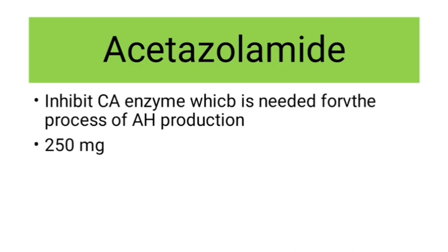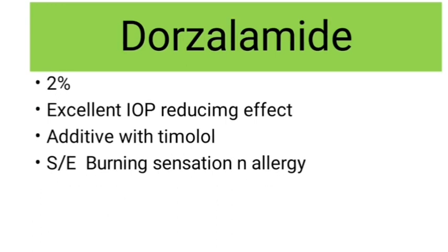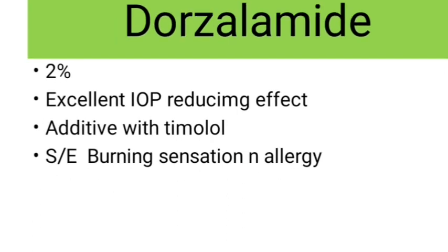The malaise symptom complex is where the patient will have malaise, fatigue, depression, and loss of libido. These are the side effects of acetazolamide. Coming to dorzolamide, which is nothing but the topically used carbonic anhydrase inhibitor — it comes in 2% drops. It has an excellent IOP-reducing effect of up to 22% reduction in IOP. It has additive effect with timolol. Side effects are burning sensation and allergy.